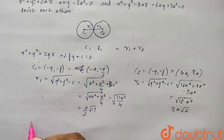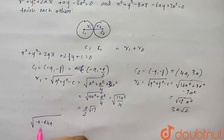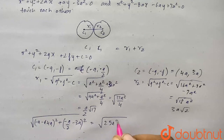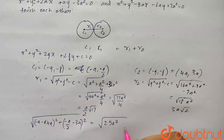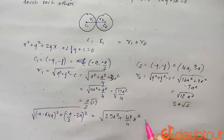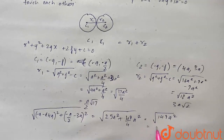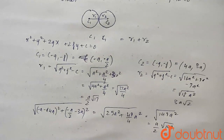Now we find the distance C1C2. The distance between the two centers gives us root of (minus a minus 4a) squared plus (minus a by 2 minus 3a) squared, which is root of 25a squared plus 49a squared by 4. Simplifying, this equals root of 100a squared plus 49a squared all over 4, which gives root of 149a squared by 4, so C1C2 equals a by 2 root 149.